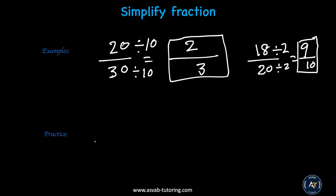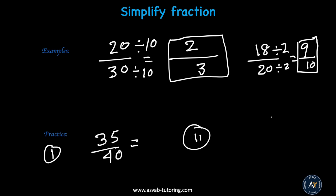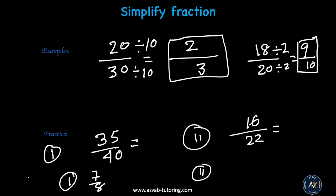Let's do some practice problems. Simplify 35 over 40 and 16 over 22. The answers: number 1 is 7 over 8. For number 2, divide by 2 — 16 divided by 2 is 8, and 22 divided by 2 is 11, giving you 8 over 11. Hopefully that makes sense.